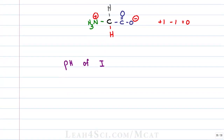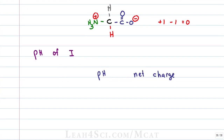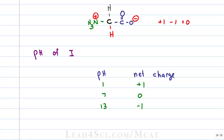In the last video we looked specifically at the charge for glycine at a pH of one, seven, and thirteen. At a pH of one we got a net charge of plus one; pH of seven we got a charge of zero; and pH of thirteen we got a charge of negative one. If pH seven gives me a charge of zero, does that mean the isoelectric point is seven? The answer is no — pH seven is simply an estimate, and the PI is a more specific calculated value.